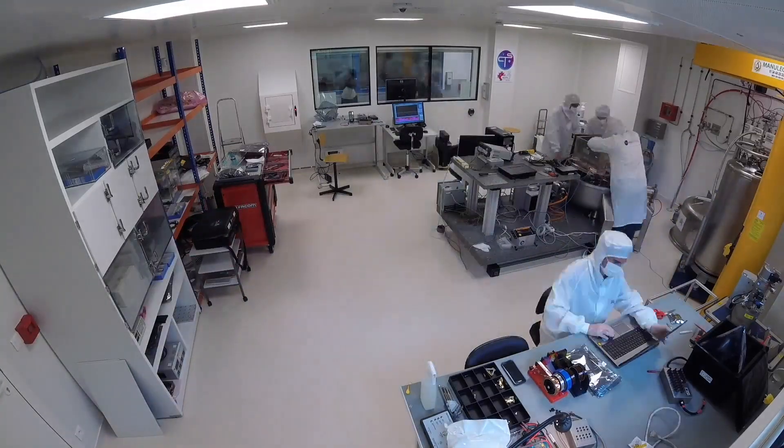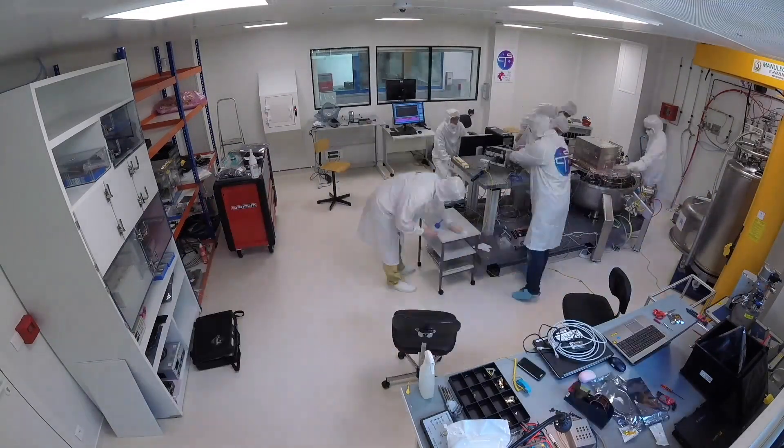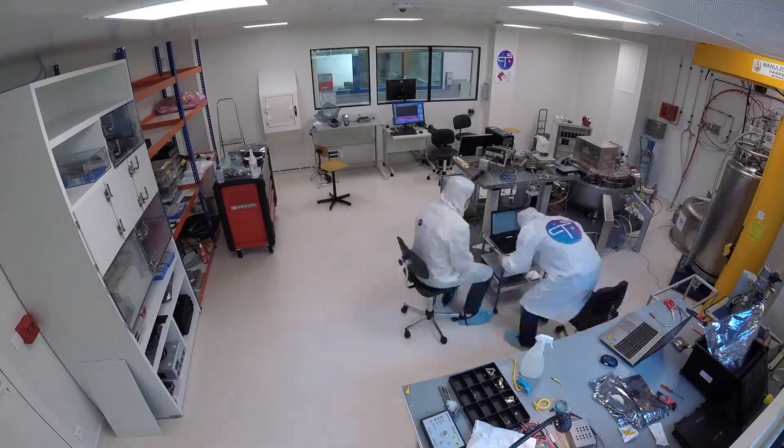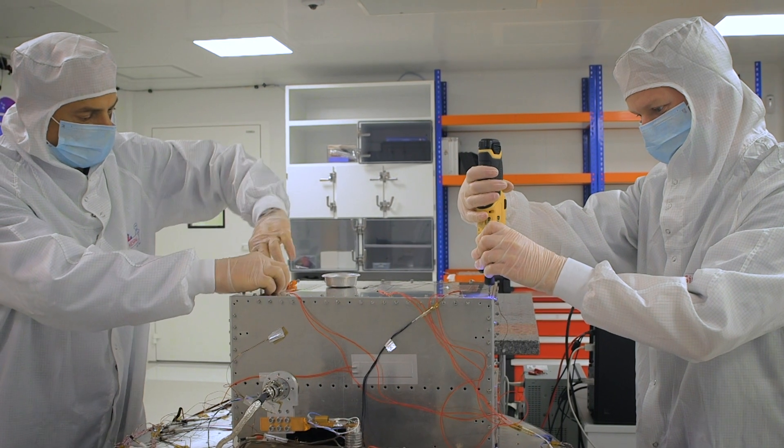We are responsible for one of the 10 instruments on Solar Orbiter. This instrument is the radio and plasma wave instrument which is measuring and listening to the radio emissions produced by the Sun. In LESIA we have built the electronic box of the instrument which has been delivered to Airbus.